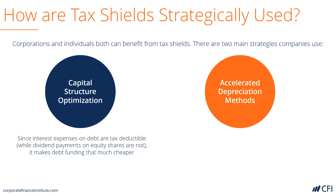With capital structure optimization, since interest expense is tax deductible, however the cost of equity is not tax deductible — meaning dividends are not tax deductible — it makes debt funding that much cheaper than equity funding.